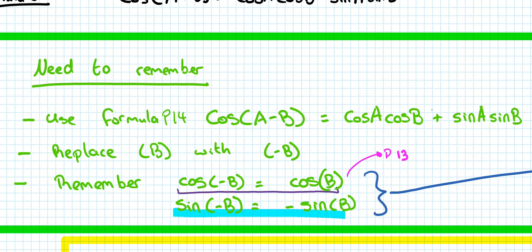So you start off by writing down that formula. What you're going to do is replace anywhere that you see B, you're going to replace it with (-B). And then the key two points that you need to remember is that cos(-B) is equal to cos(B), and sin(-B) is equal to -sin(B).